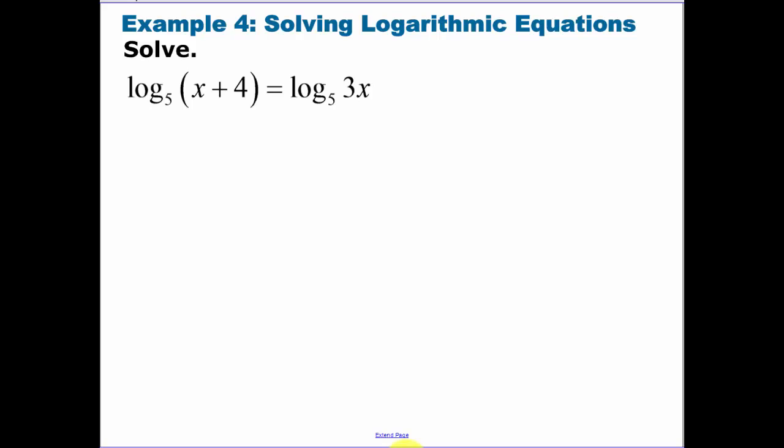Okay, again. You have a log on one side, log on the other side. Set the insides equal. So x plus 4 is equal to 3x. I'm going to subtract the x over to get 2x. x is equal to 2. Now you could just do a quick check here. When I plug in 2, we get a 6 on the left and we get 6 on the right. So that works. We had no negatives. That was a super easy one.